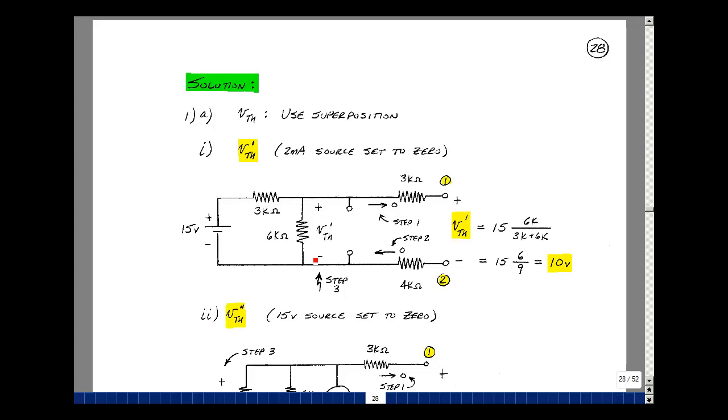What is the voltage V Thevenin prime? Well, I've got the same current in these two resistors, because there's no current here. I use the voltage divider rule. 6k over 6k plus 3k times 15 is the voltage across these terminals, which is also the voltage across here. We're going to call that V Thevenin prime. 6 over 9 times 15 is 10.